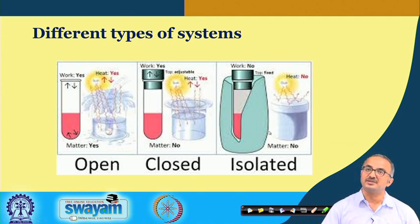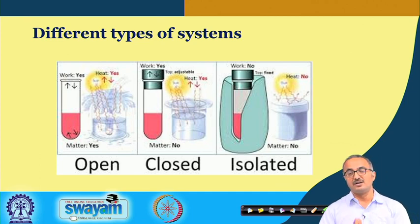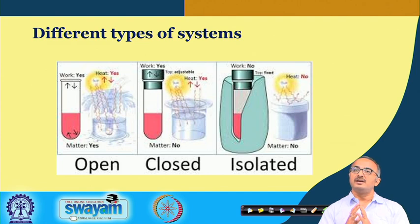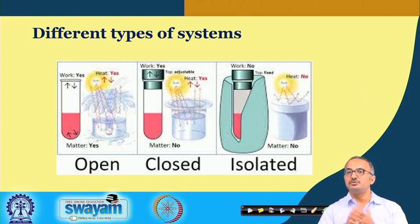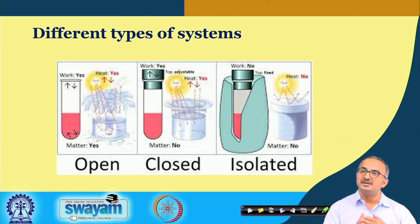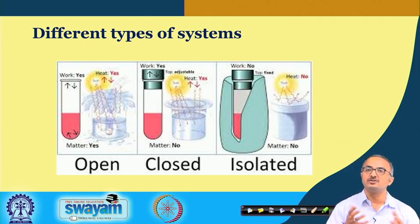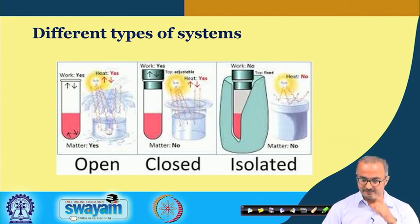The third type is the isolated system. A thermos flask is one example: we put some liquid in it and want the temperature to remain constant. This is possible only when we insulate the flask. If insulation fails, energy exchange starts and we cannot maintain the temperature inside. So the flask is an example of an isolated system.